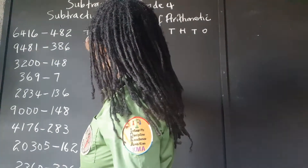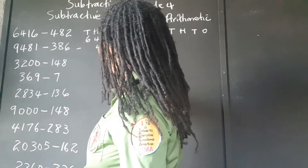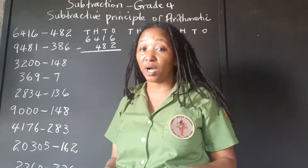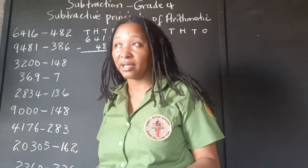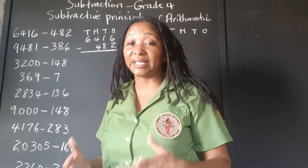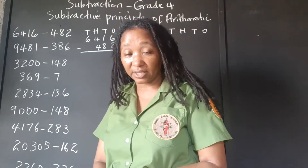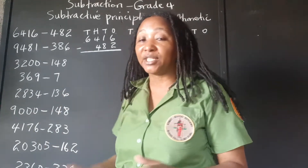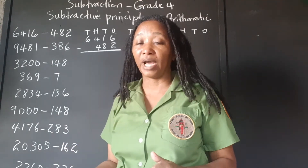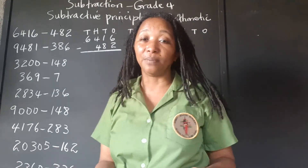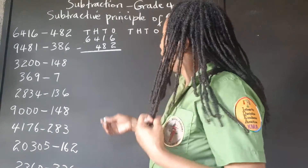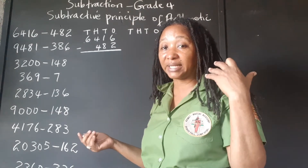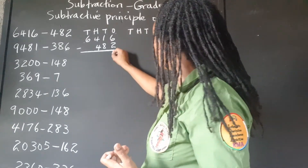6,416 subtract 482. Remember, the kinds of problems that indicate subtraction are those literally saying subtract, take away, find the difference, or minus. If it says a certain amount was taken away and asks how much is left or how much remains, those usually indicate subtraction. So we have 6 ones and we're taking away 2 ones — 6 take away 2 is 4.